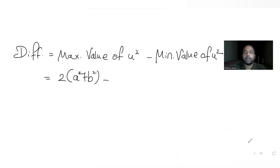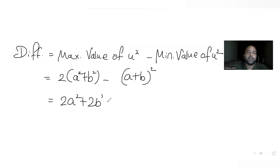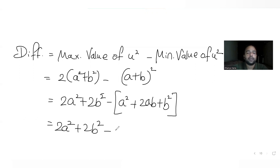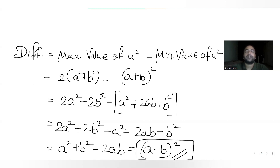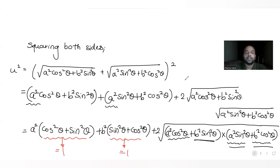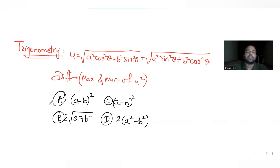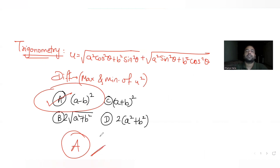The difference is maximum value minus minimum value of u square. That is 2(a square plus b square) minus (a plus b) whole square. Expanding: 2 a square plus 2 b square minus (a square plus 2ab plus b square), which gives 2 a square minus a square plus 2 b square minus b square minus 2ab, that is a square minus 2ab plus b square — the expansion of (a minus b) whole square. So the difference is (a minus b) the whole square, and the correct answer is option A.